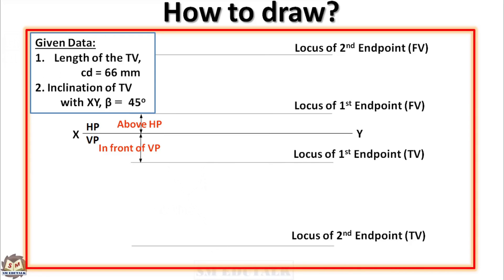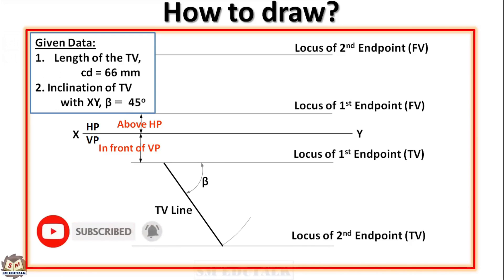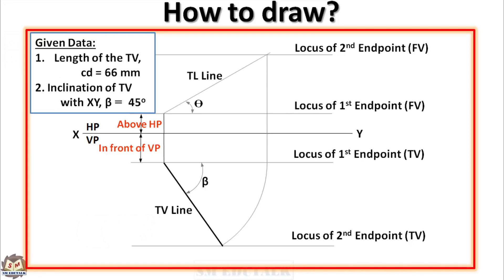That is, a top view line should be drawn first by connecting first endpoint locus and second endpoint locus in that view. Then it should be rotated to the first endpoint locus of the same view. After rotation, it should be projected to the corresponding locus lines in the other view. Now what you get is the true length line. Based on this idea, we will see how to draw both the projections of the line.